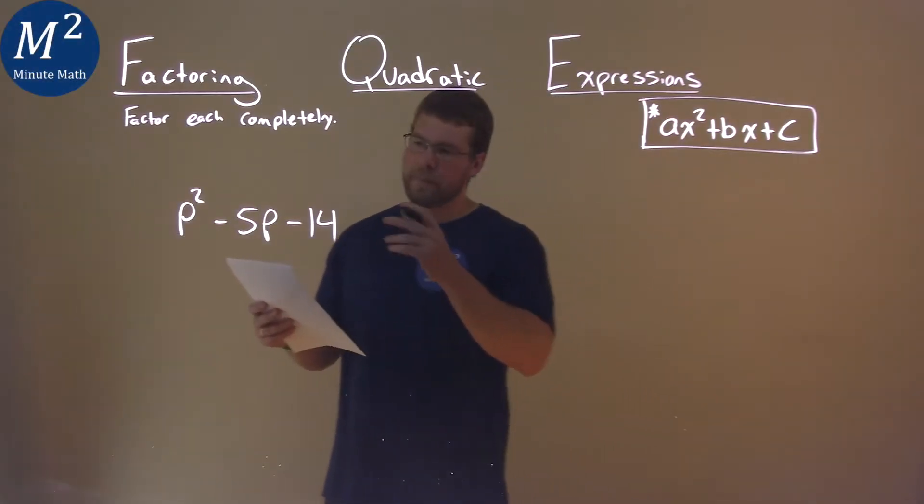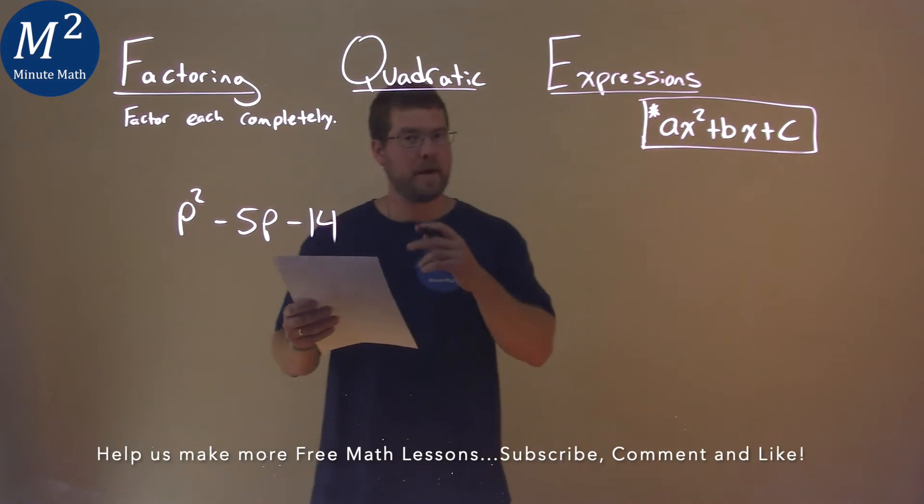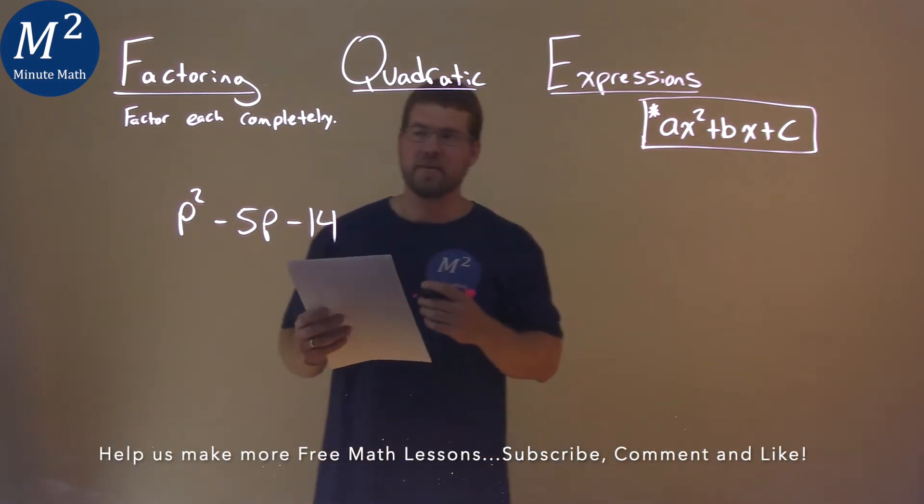We're given this problem right here: p squared minus 5p minus 14, and we have to factor this completely.